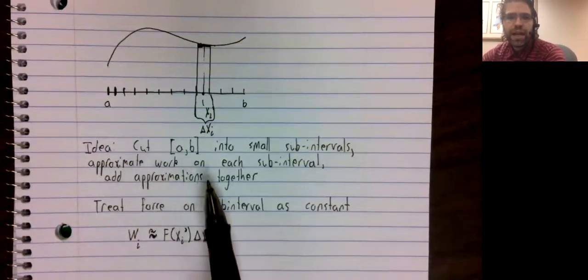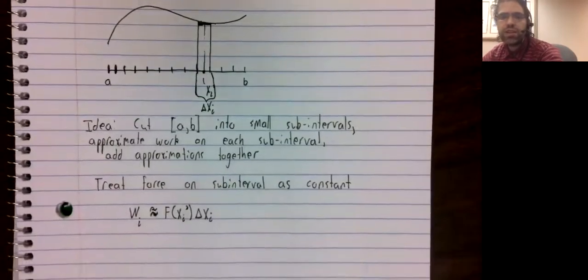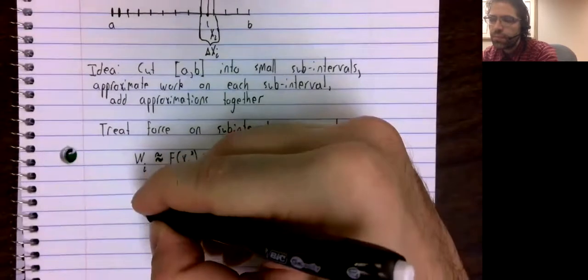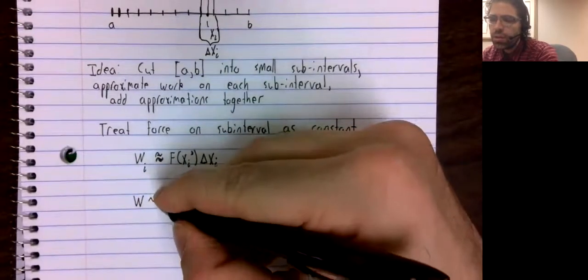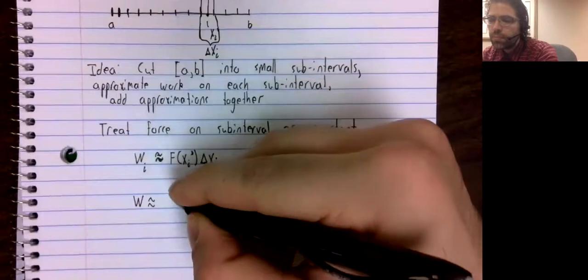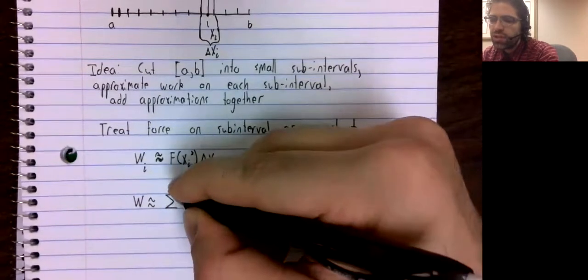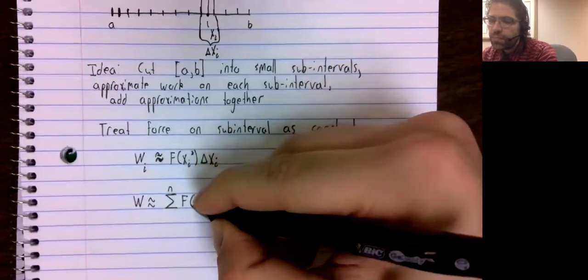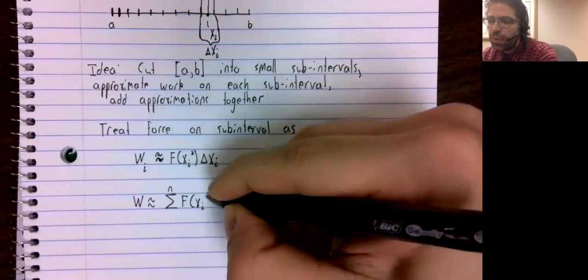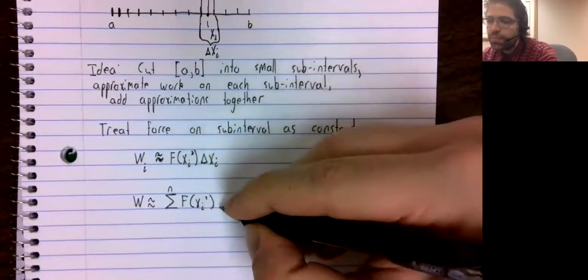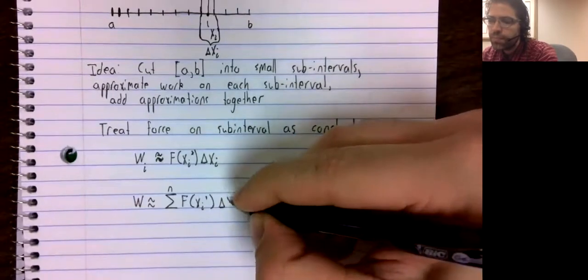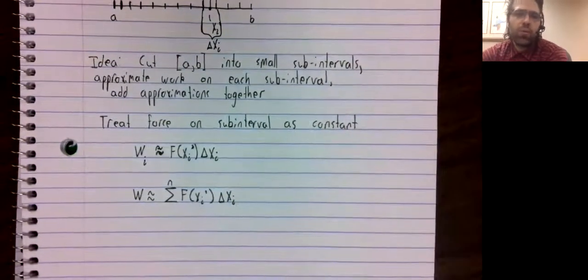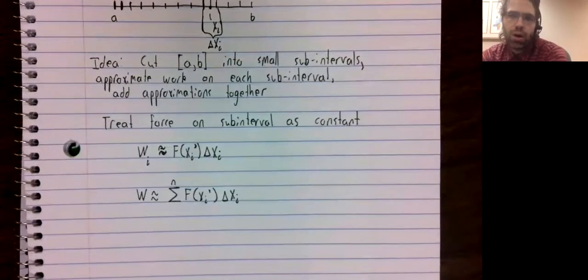When we add all of these approximations together, the work is approximately this sum. And this sum, of course, is a Riemann sum.